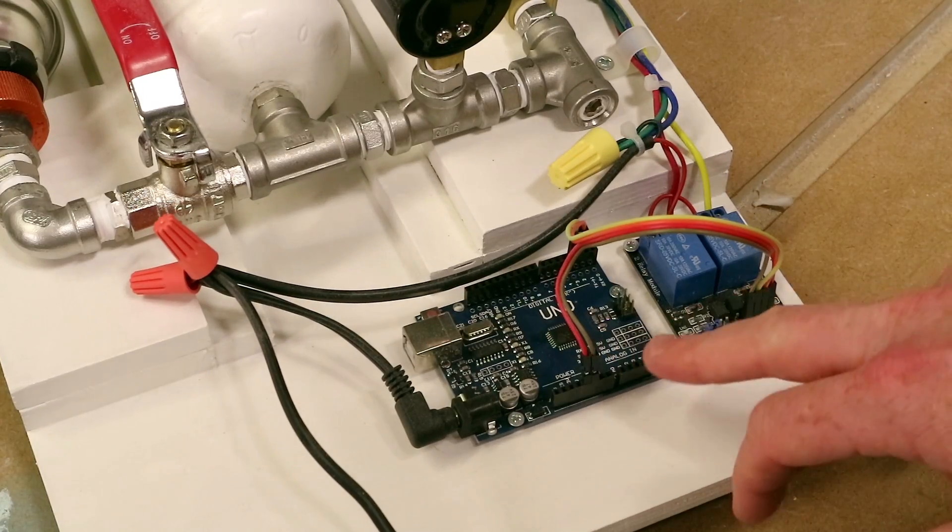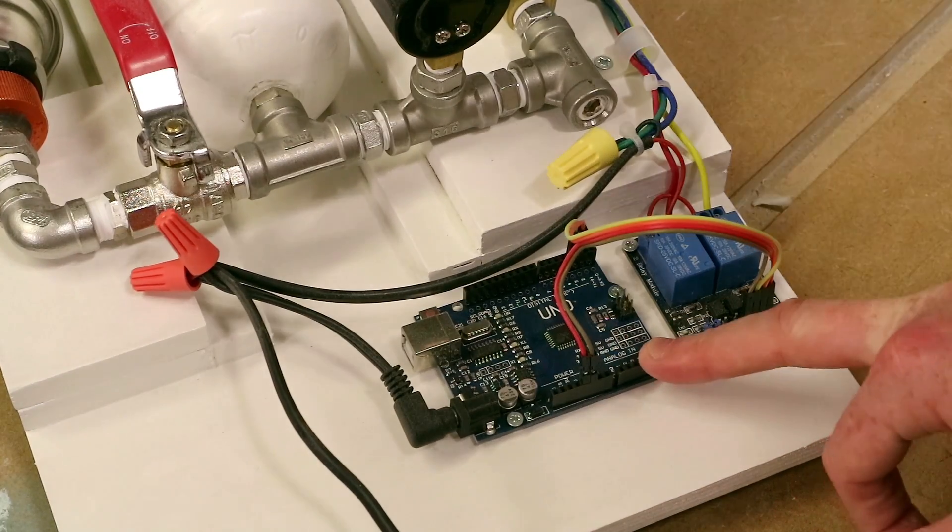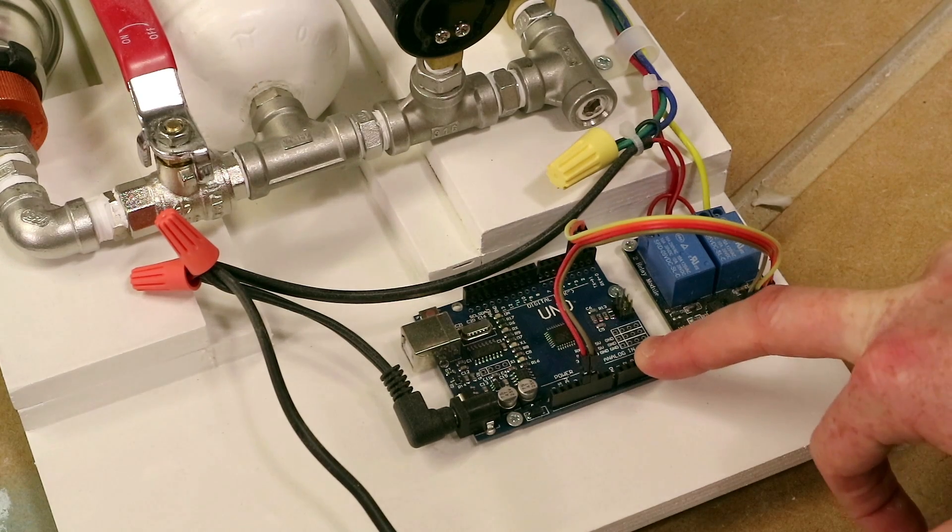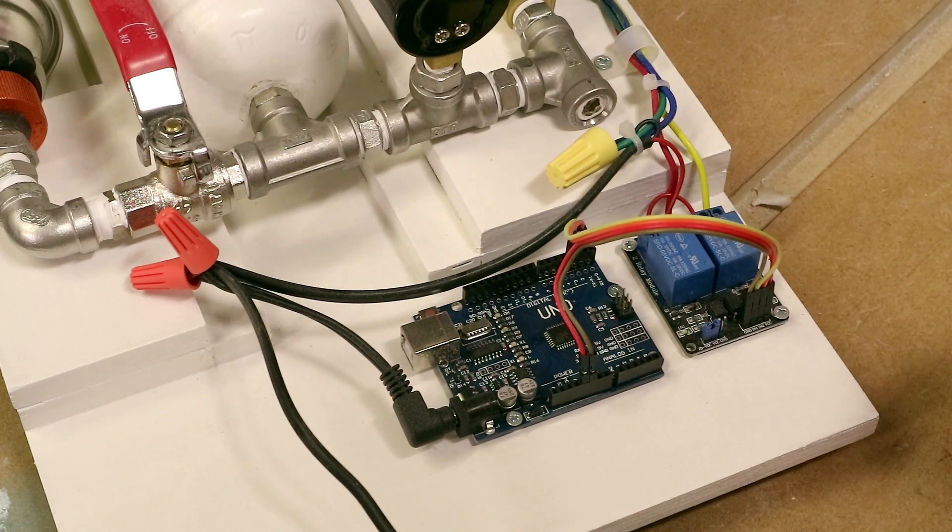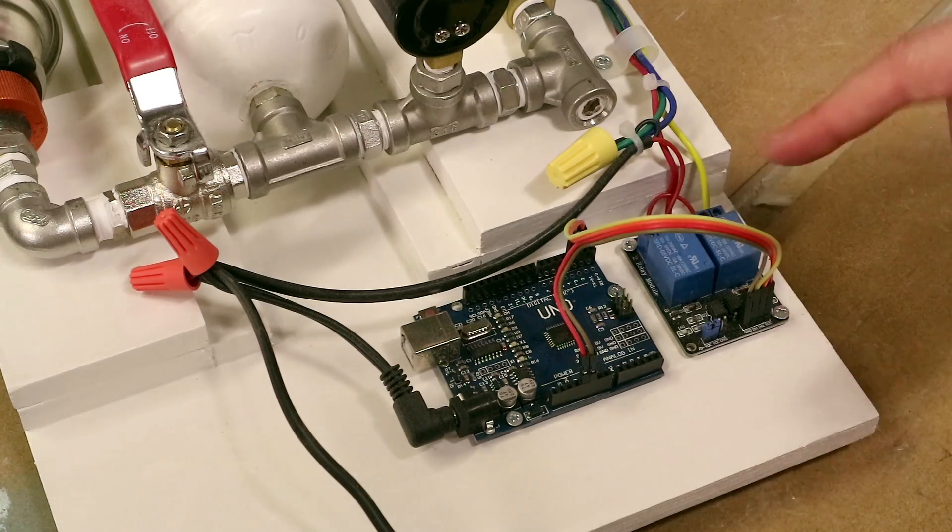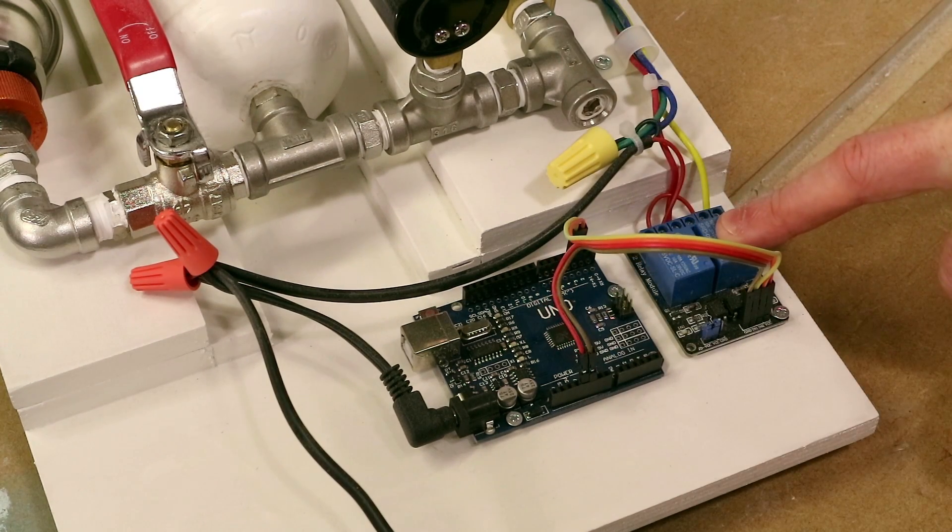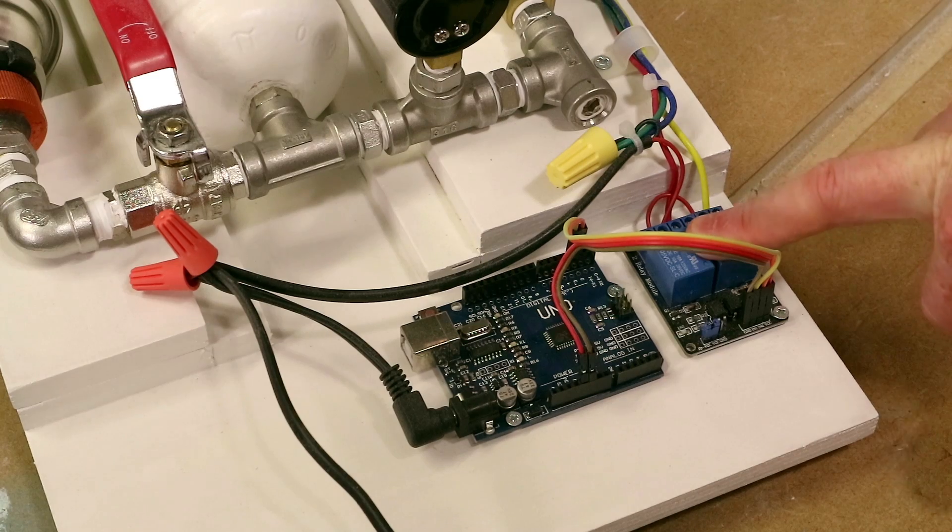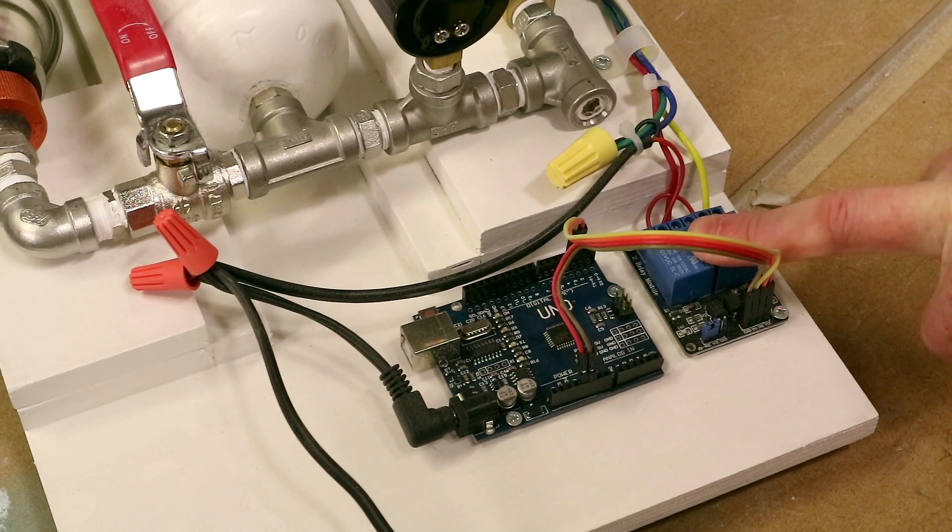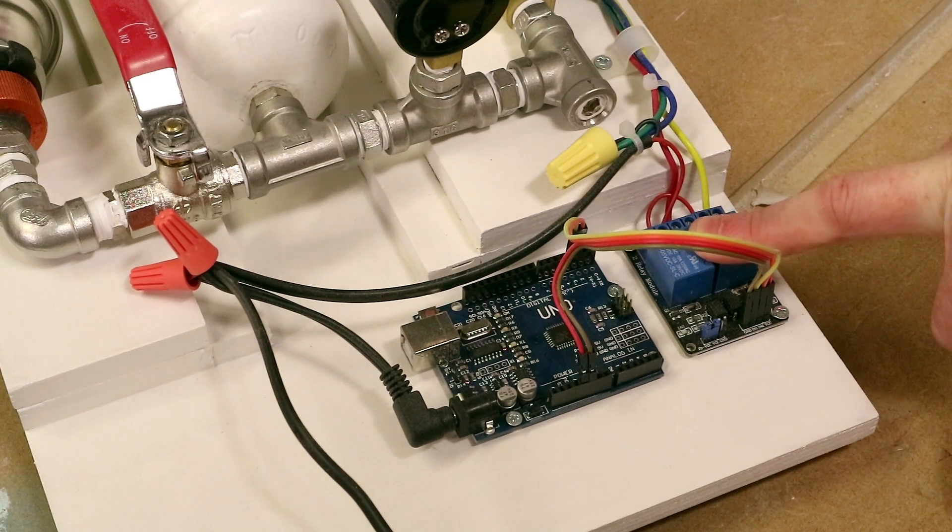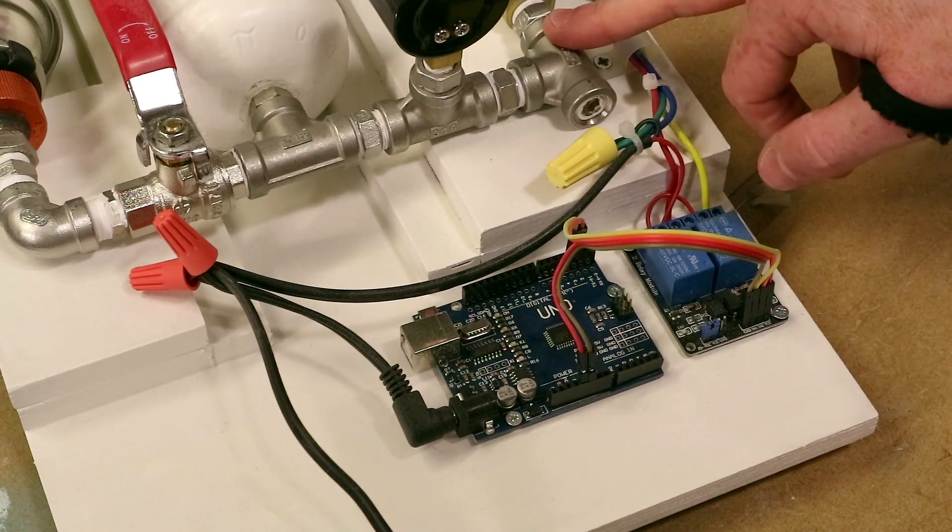To control everything, I'm using an Arduino Uno. This provides the timing signals to trigger the gas and the spark ignition. Everything's interfaced through this dual relay board, and the relay board will then provide the roughly 12 volts needed for the spark igniter and the valve.